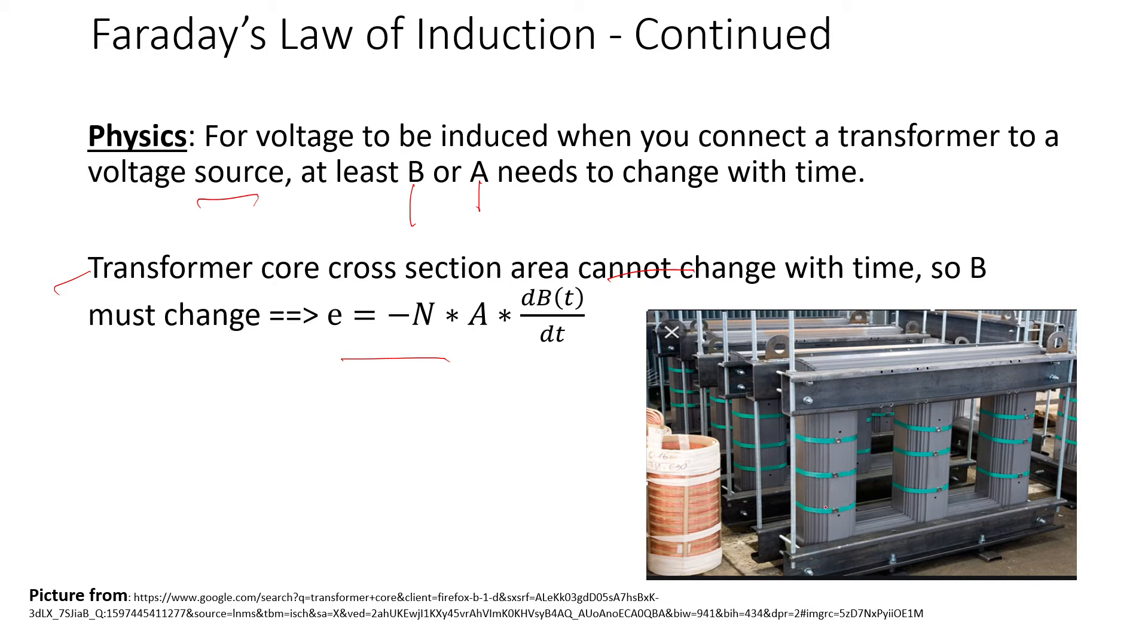We know the transformer cross-section area cannot change with time, so the flux density must change. If you look at the core, here's one leg, there's another one, and there's a top yoke and bottom yoke that connects the legs to complete the circuit. There's also a core clamp keeping the yokes together because they have laminations. As we see, I can't change the cross-section area of the core with time, so really the only thing that changes is flux density.